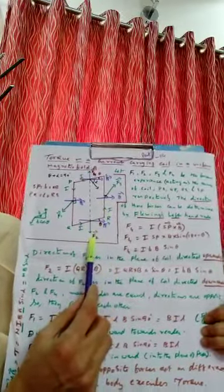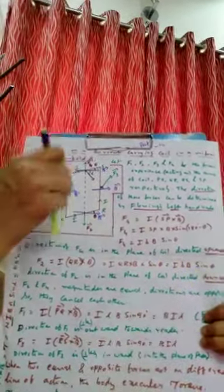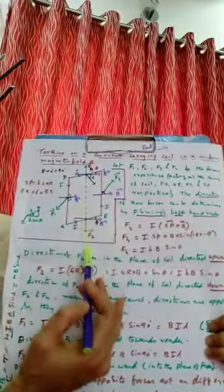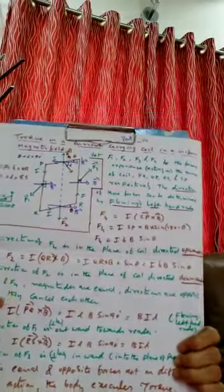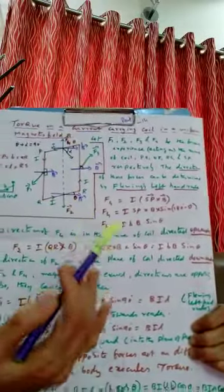Now, F2 is the force experienced by arm QR. F2 = I × QR × B × sinθ = IBB sinθ. But the direction of F2 is downwards. F4 is upward and F2 is downward, and they act on the same line of action. As we studied in class 11, when two equal and opposite forces act on the same line of action, the net force is zero — they cancel each other. So the coil will not rotate breadth-wise.